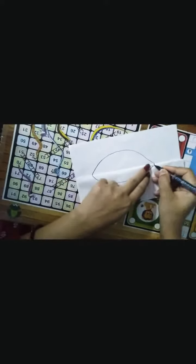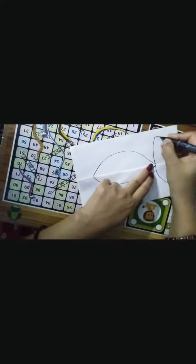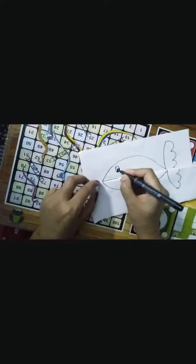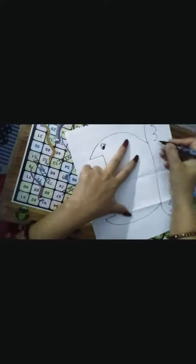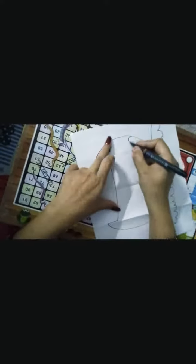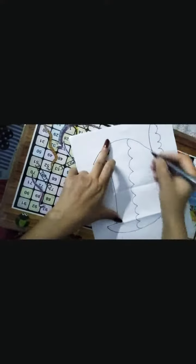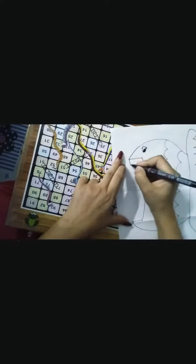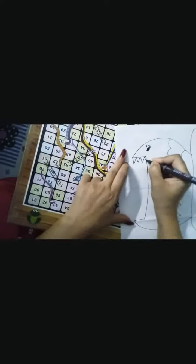Now, let's draw something with me. Now, we will draw a fish. Fish is done. And now, open it and now draw in this portion. Make teeth also. Done.